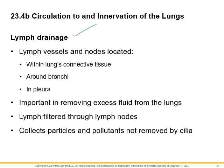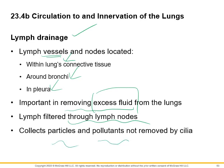Lymphatic vessels and nodes are located within the lungs — in connective tissue around the bronchioles and in the pleura. These are important in removing excess fluid from the lungs. The lymph is filtered through the lymph nodes — yet another way to clean any pathogens that happen to make it this far.